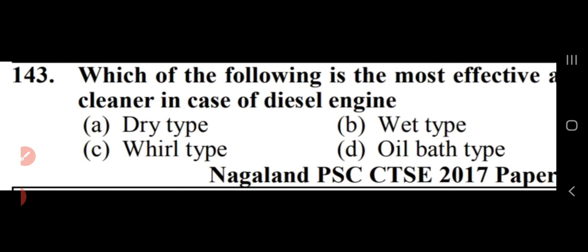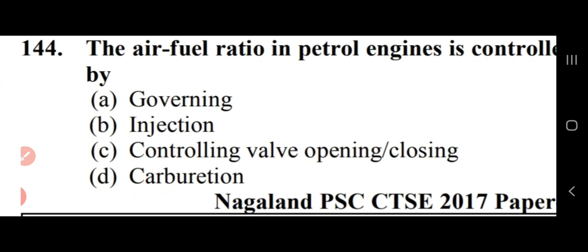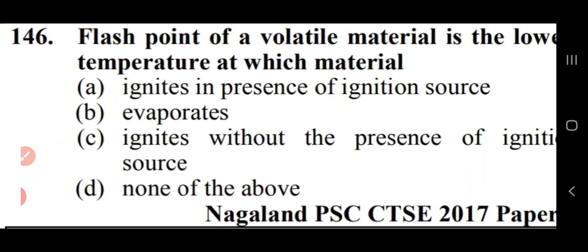The most effective air cleaner for a diesel engine is the oil bath type — option D. When air-fuel ratio is about 10% rich mixture, a high flame speed is obtained. The air-fuel ratio in a petrol engine is controlled by the carburetor — option D.